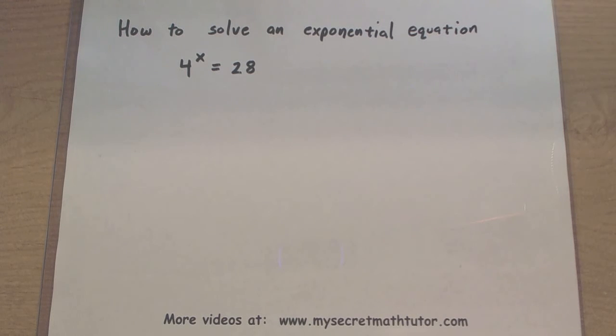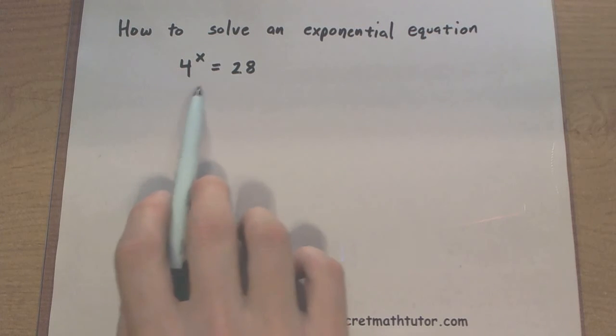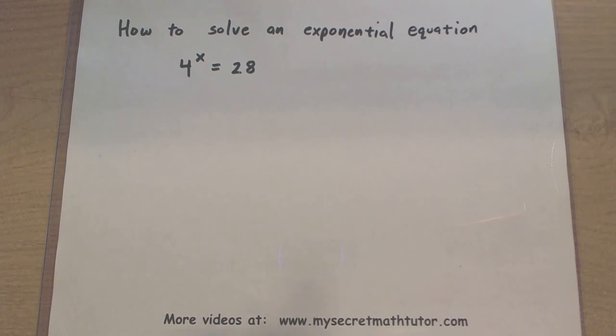So the basic idea is that we want to get x all alone, but unfortunately it is in the exponent on the left side here. So we have to figure out some way of getting it out of that exponent.